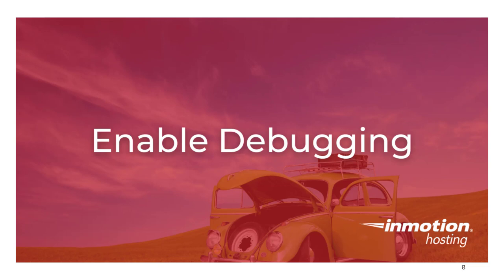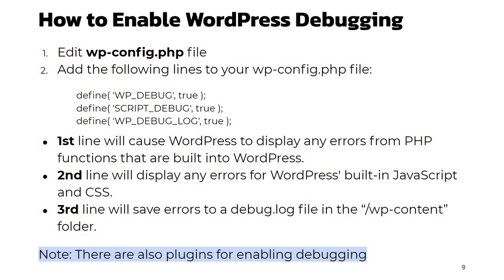A lot of times there are errors occurring but they're being suppressed or hidden. Enabling debugging allows them to display on the page or be logged to a file, but be careful when testing this since it may expose information about your site. You may want to test on a clone of a site or at a time when traffic is low. To enable WordPress debugging, just edit your wp-config.php file — it should be in the document root of your site — then add these three lines and save it.